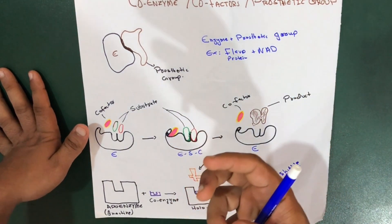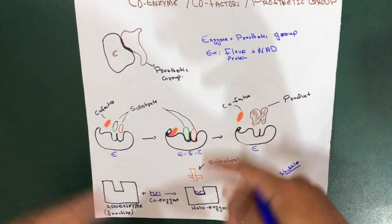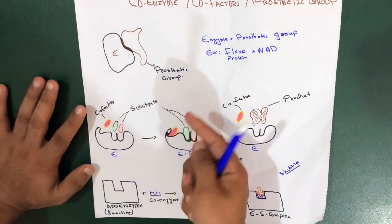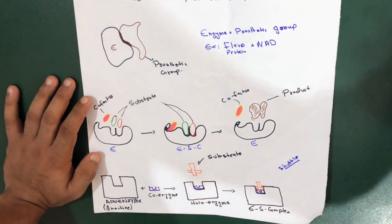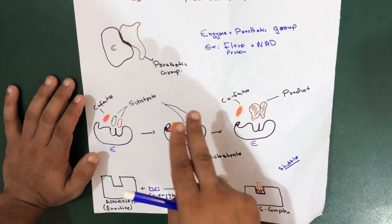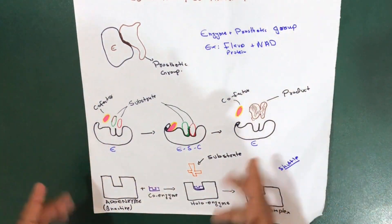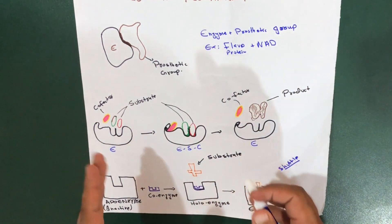According to the definition, coenzyme actually serve as a recyclable, which means we can use it again, shuttle that transports substrate from one point within the cell to another. This is the basic concept and this is a very important concept regarding coenzyme, very specific about that word.